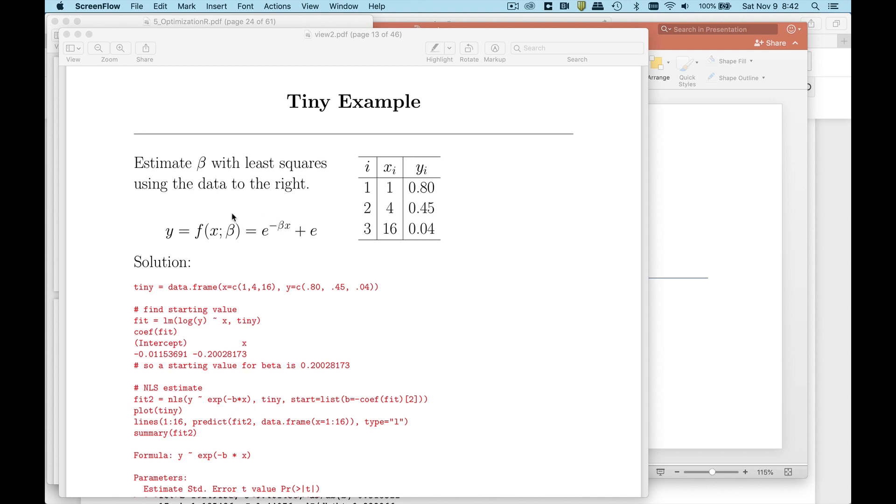We had a nonlinear least squares problem, I called this the tiny example. We had three observations and we assumed that each one of these y values had been generated as e to the negative beta times this x value. The problem is we don't know what beta is, so we're going to estimate this using nonlinear least squares.